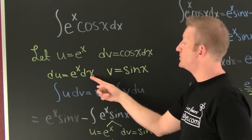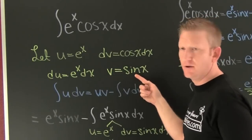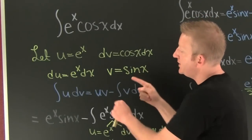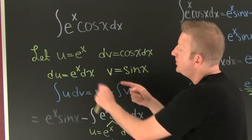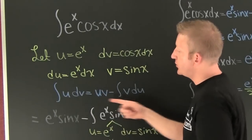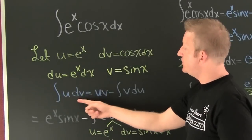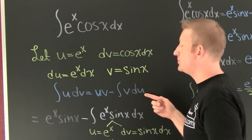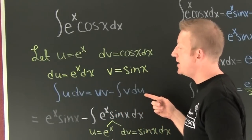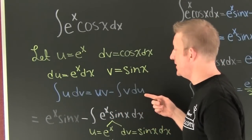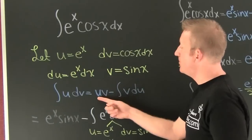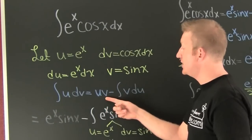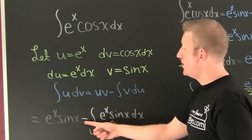We're going to find our du and we're going to find our v. We need this form: the integral of u dv is equal to u·v minus the integral of v du. Now let me put my pieces in there — my u is e to the x, my v is sine x.